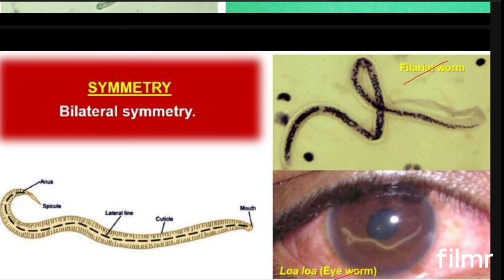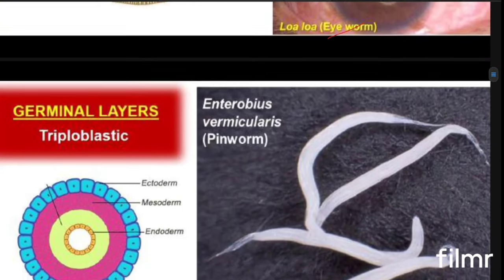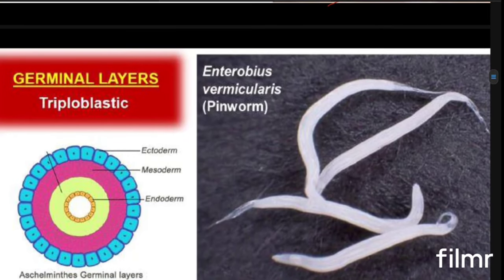If you check the germinal layers, they are all triploblastic organisms, having ectoderm, endoderm, and mesoderm. The three germ layers are present, so that's why these organisms are triploblastic in nature.